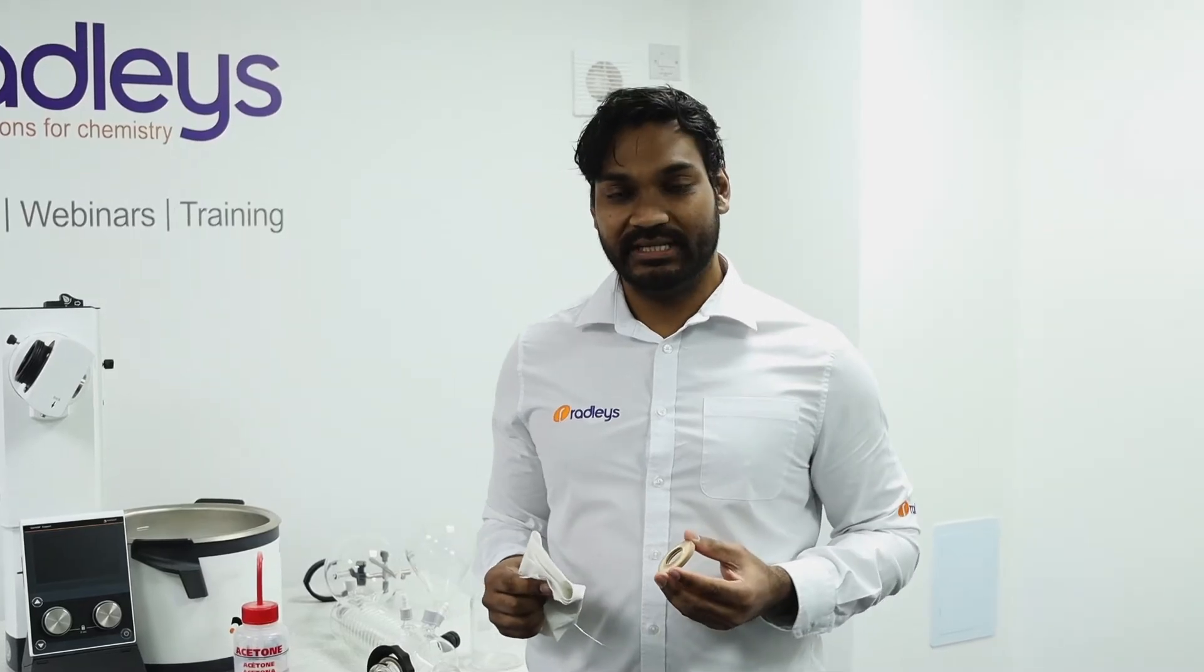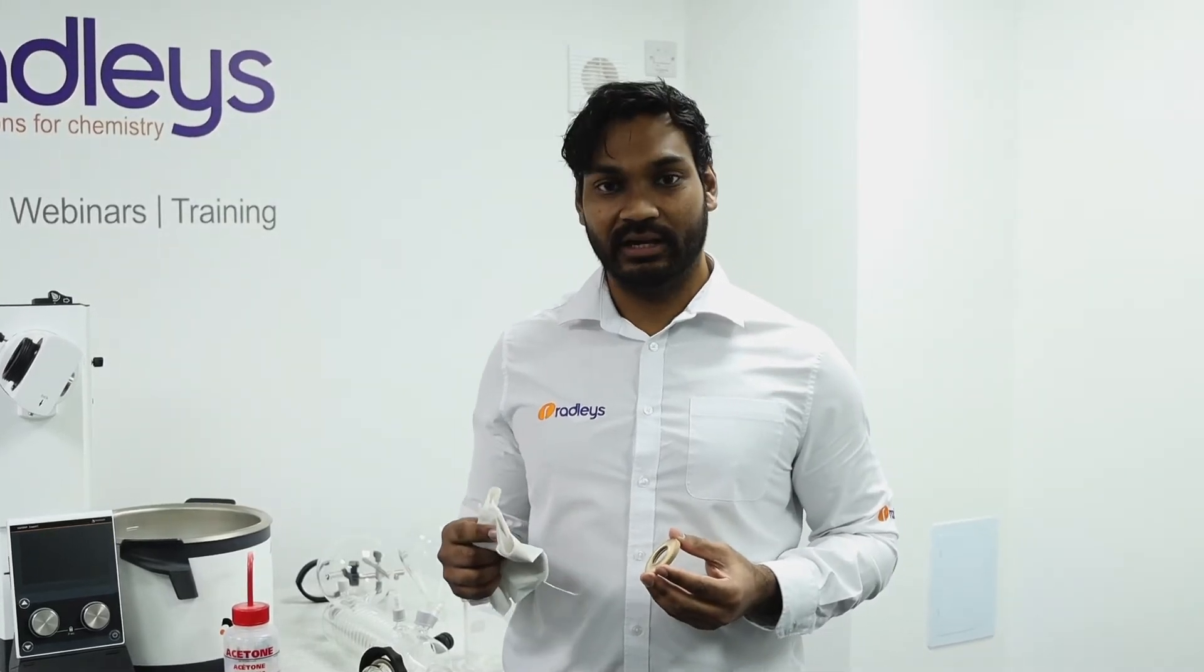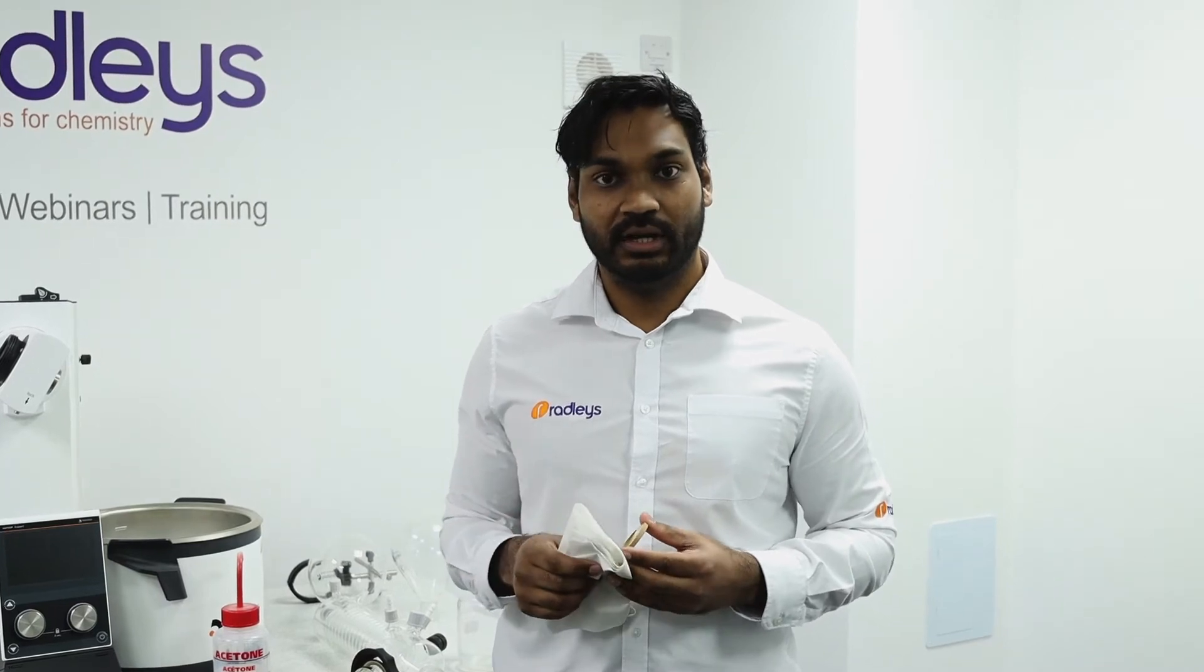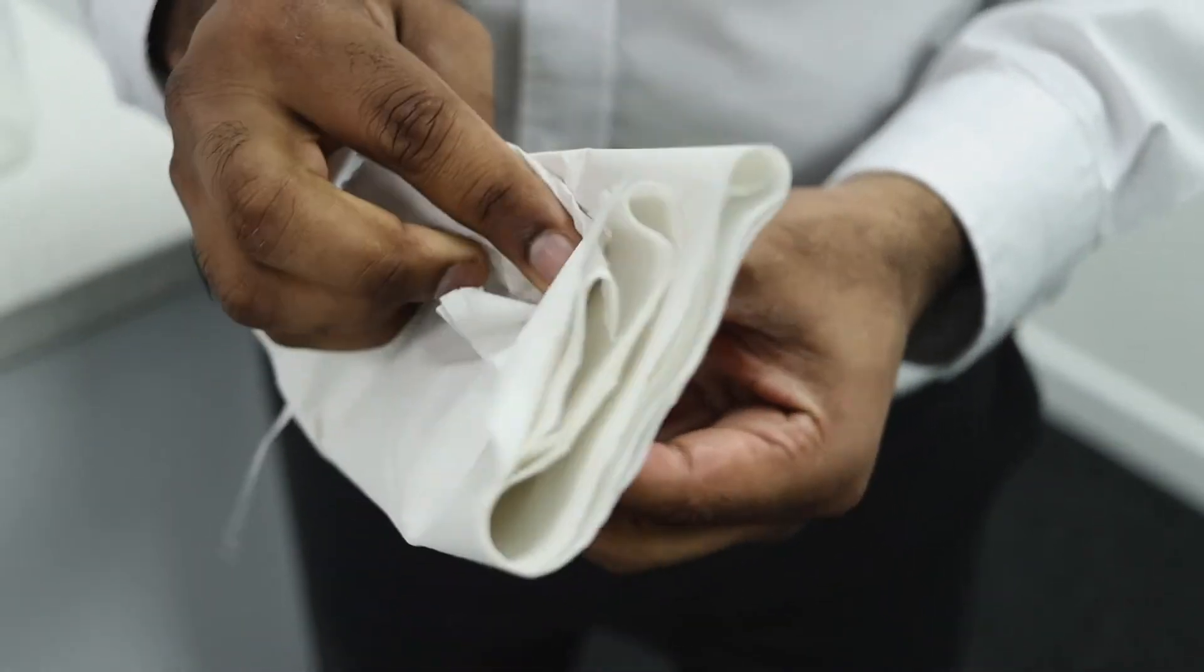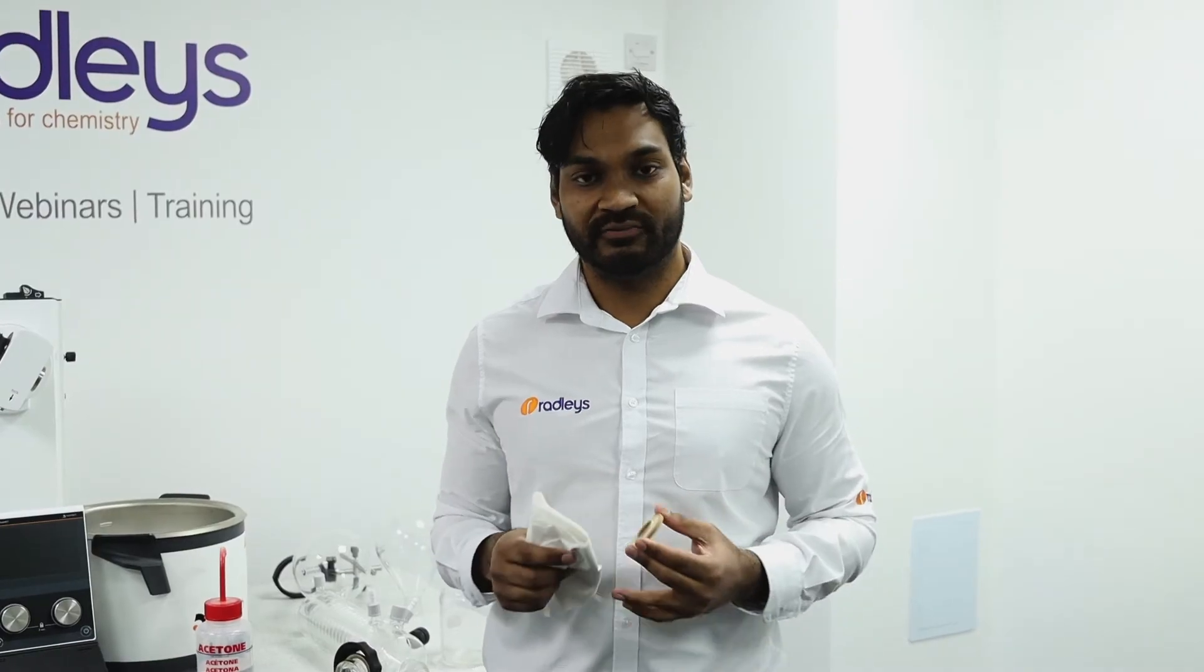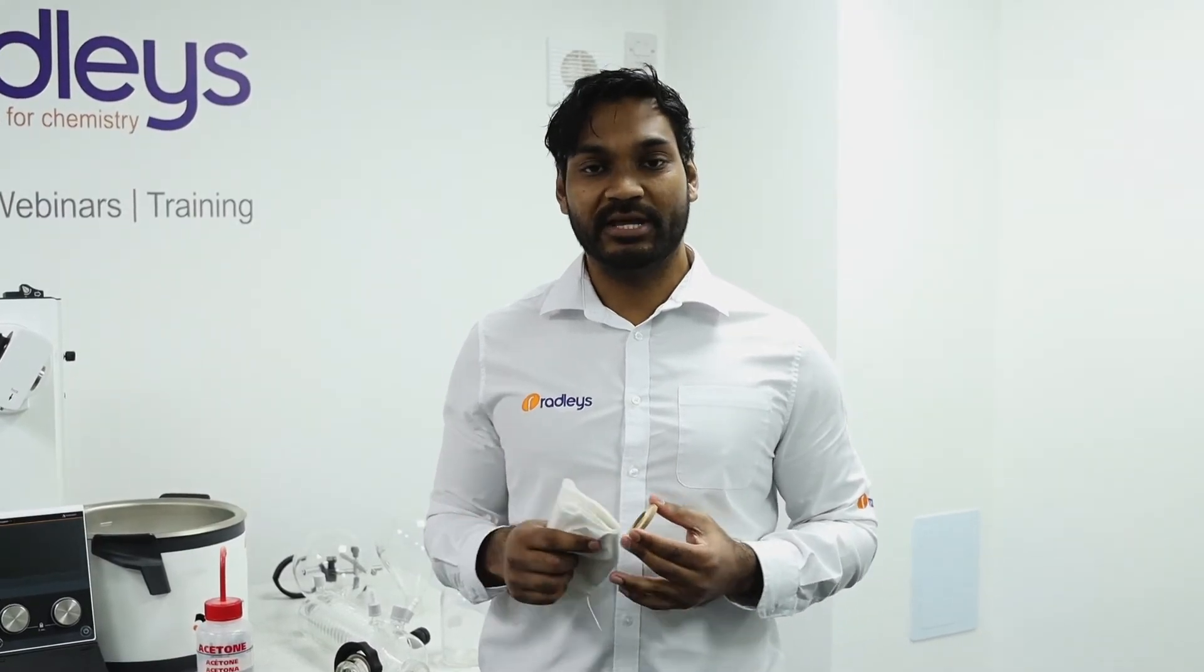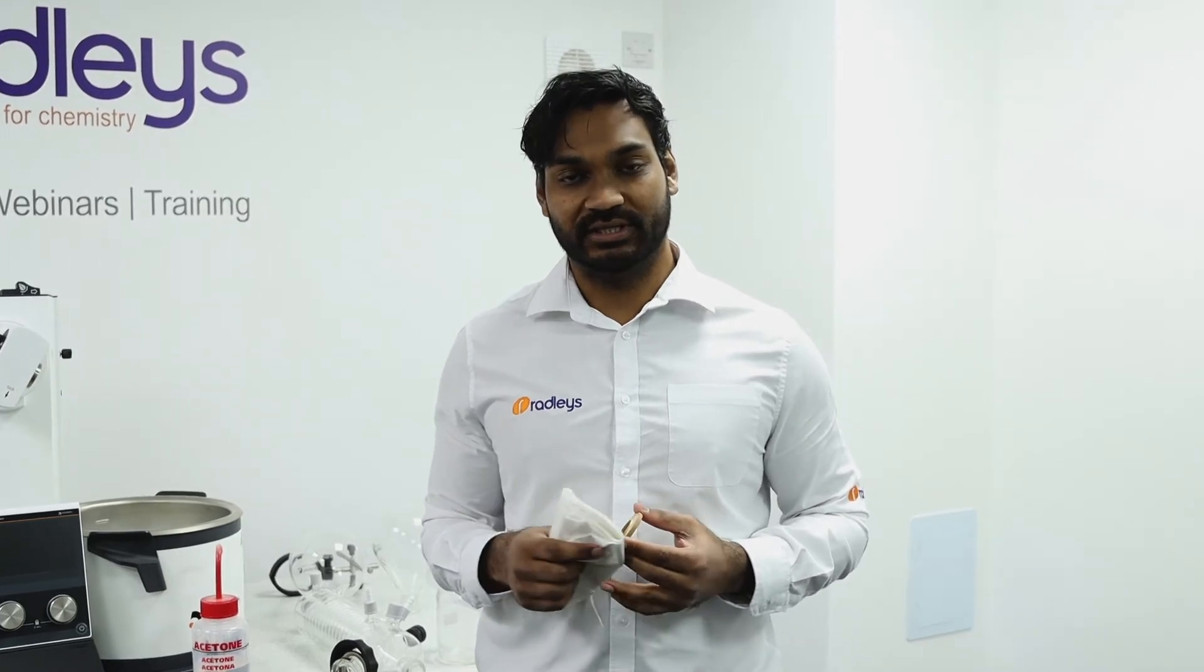Now you can give your vacuum seal a clean by using some paper towel and wiping it with some acetone. Now the Hi-Adolf vacuum seal we say has an average lifetime of around four years which could be longer depending on what you're evaporating and we recommend that you clean it every month for the best results.